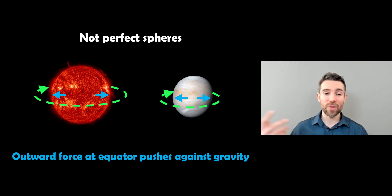And the faster they rotate, then the more exaggerated that effect is. They're not perfect spheres, they do have a slightly wider equator than they are across their poles.